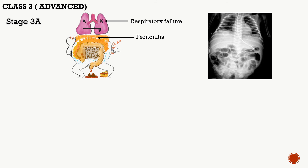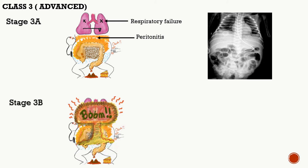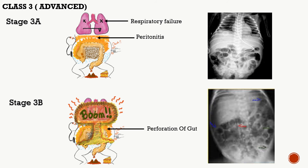If the disease still progresses, the gut becomes so inflamed that it perforates. The peritoneum is fully exposed to gut contents, developing perforation of the gut, which is seen radiologically as gas under the diaphragm. With this, we complete Bell's classification.